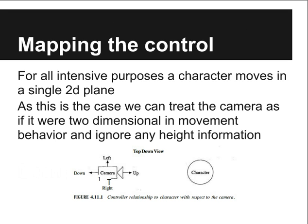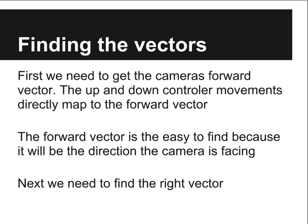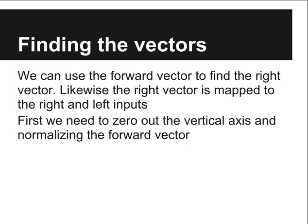Below is the relationship mentioned before between the camera and the character. Two vectors are needed to map the camera into world coordinates. The first vector is the forward vector, which corresponds to the up and down controls. This is trivial to find because it is the direction the camera is facing. Now that we have the forward vector, we need to remove the height information and normalize the vector.